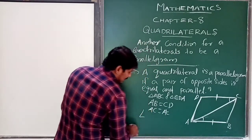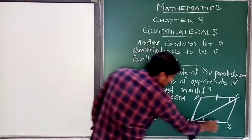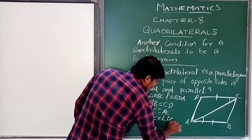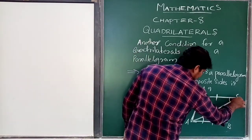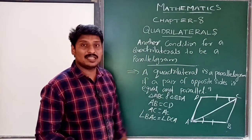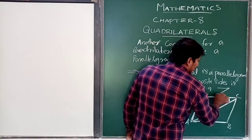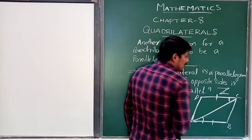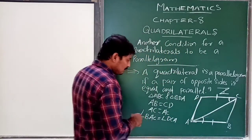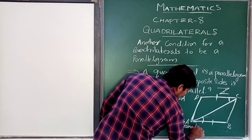Angle BAC equals angle DCA, and angle DAC equals angle BCA — these are alternate angles. Since CD and AB are equal and parallel, these alternate angles are equal, giving us two sides and one angle equal for the two triangles.